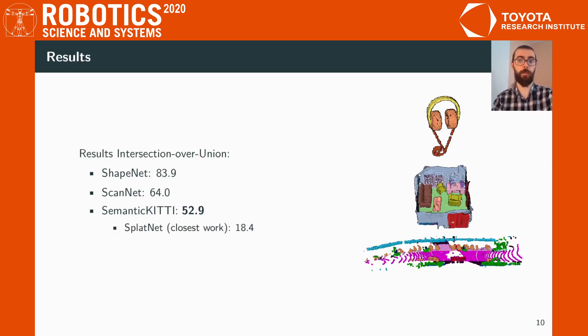Compared to SplatNet, which is another work that uses the permutohedral lattice, we have a significant improvement with respect to the intersection over union.